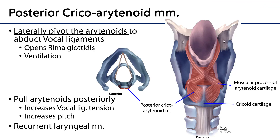Let's start with the posterior cricoarytenoid muscles. The names reflect their attachments: they originate on the posterior aspect of the cricoid cartilage and insert on the muscular process of the arytenoid. When they contract, they pivot the muscular process of the arytenoid cartilage laterally, making them abductors of the vocal folds — they open the rima glottidis maximally for ventilation. These are the only muscles which do this. They also slightly pull the arytenoid cartilages posteriorly, ever so slightly increasing vocal ligament tension and pitch. They are innervated by the recurrent laryngeal nerves.